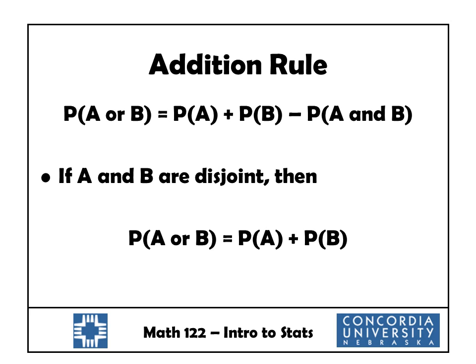To refresh our memory, the addition rule we saw in the last section was stated as this: the probability of A or B is the probability of A plus the probability of B minus the probability that A and B both occur. We had to subtract the probability of A and B to make sure that we didn't double count anything. However, in the case where they were disjoint — meaning that they cannot occur at the same time — then the probability of A and B is zero, and so our formula simplifies down, and we don't have to subtract anything because we don't have to worry about double counting.